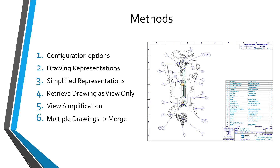Let's talk about the different methods that you could use to improve your performance. There are essentially six different methods. First, configuration options. Second, drawing representations. Third, simplified reps. Fourth, retrieving a drawing as view only. Fifth, simplifying the display of your views. And finally, working on multiple drawings and then merging them together at the end.